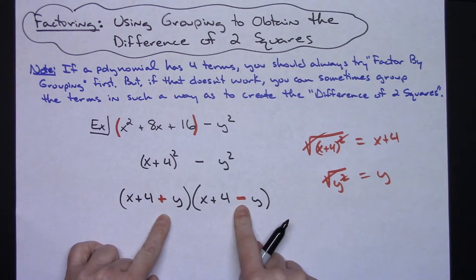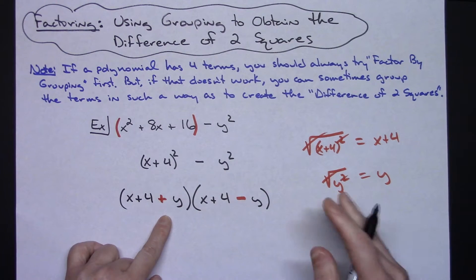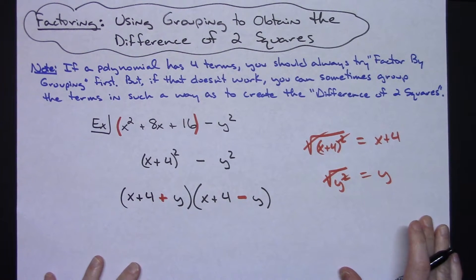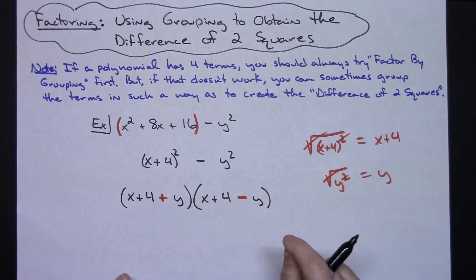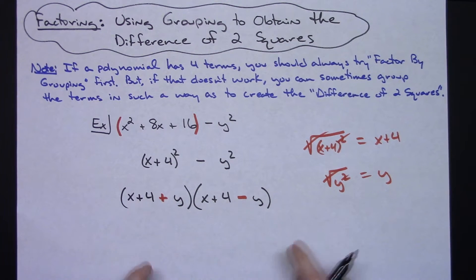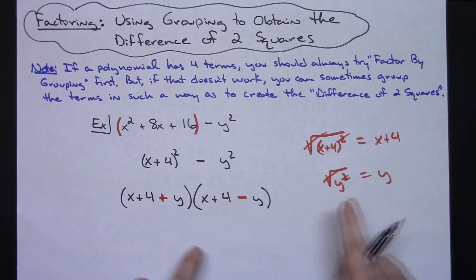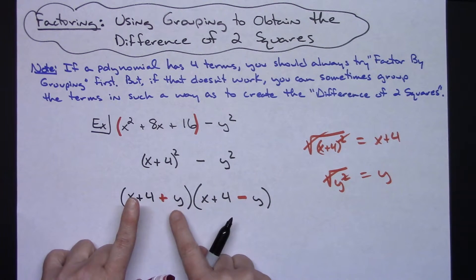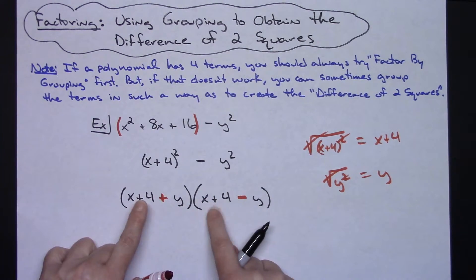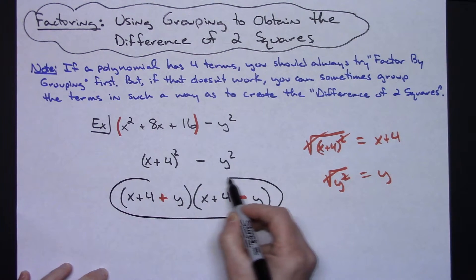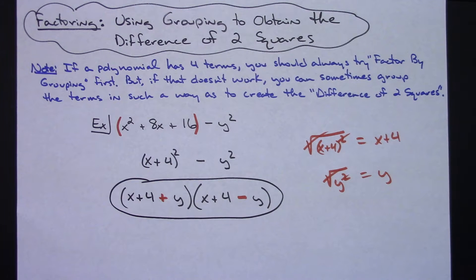These two colors illustrate the concept of the difference of two squares. When you factor the difference of two squares, you take the square root of each term and write them with a plus and a minus. So the square root of the first term was x plus 4, the square root of y squared was y — first term plus the second one, first term minus the second one. Since none of these are like terms, that's the final answer for this example.